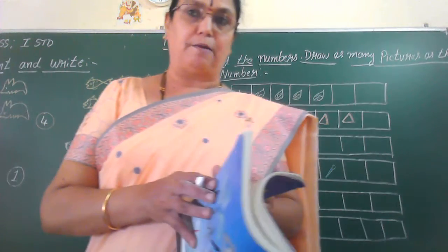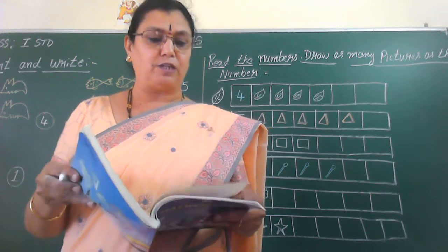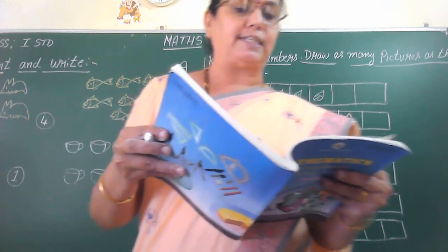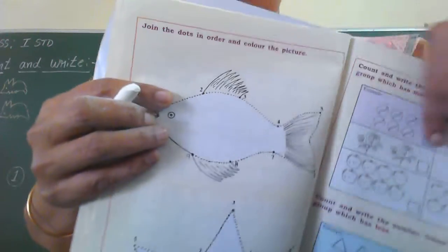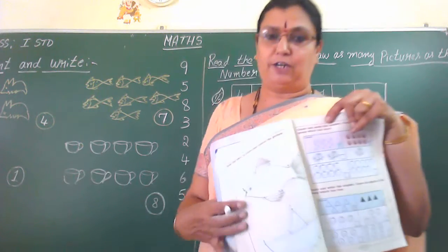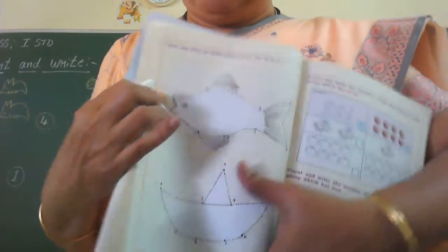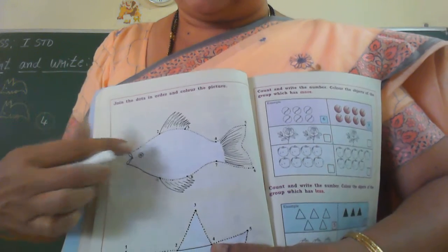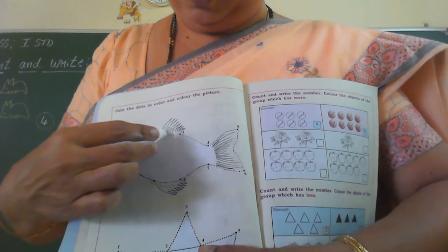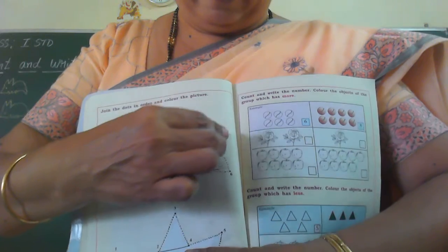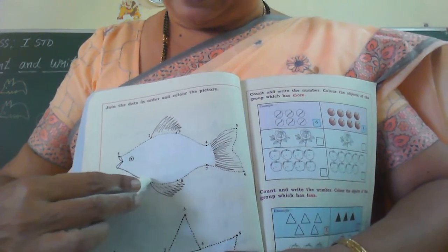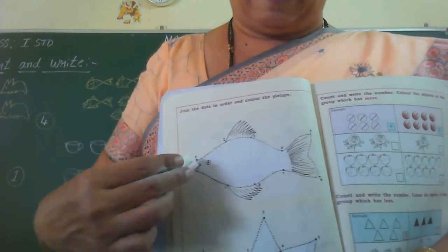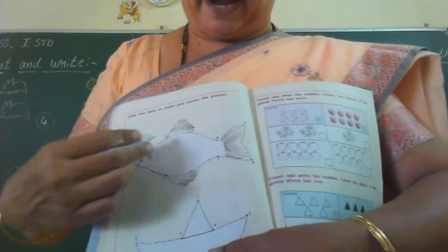Turn to page number 56. You have to do this, children. Join the dots in order and colour the picture. What is there in this picture? Fish. They have drawn fish there, and they have given dotted lines with numbers also. From one, start drawing from here. One, two, three, four, five, six, come back to seven, eight, nine. One to nine only. So you have to complete this dotted line and colour it children.